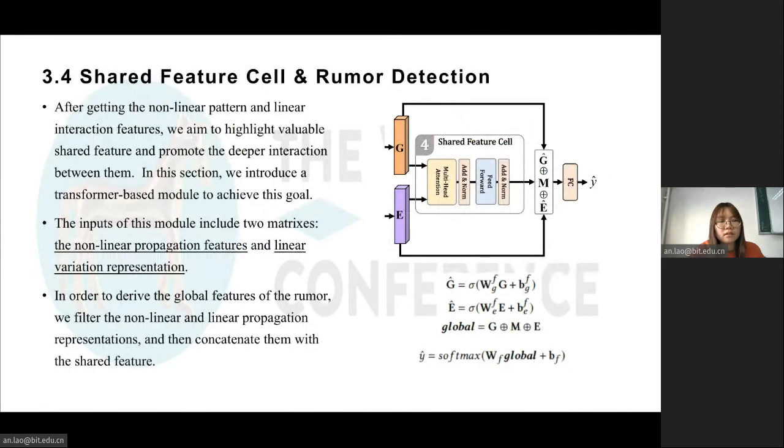After getting the nonlinear pattern and linear interaction features, we aim to highlight valuable shared features and promote the deeper interaction between them. In this section, we introduce a transformer-based module to achieve this goal. The input of this module includes two matrices: the nonlinear propagation features and linear variation representation. Here, query matrix is the nonlinear propagation embeddings. Key and value matrices are the linear variation representation. In order to derive the global features of the rumor, we filter the nonlinear and linear propagation representations and then concatenate them with the shared feature.